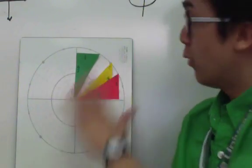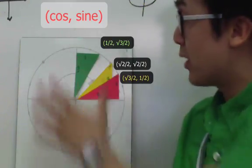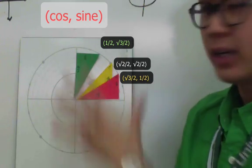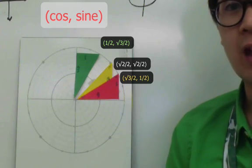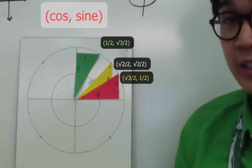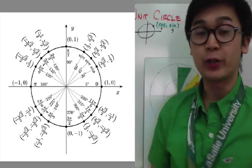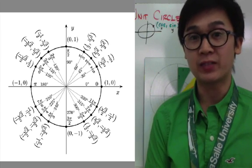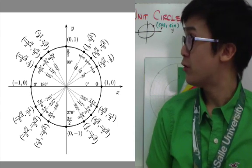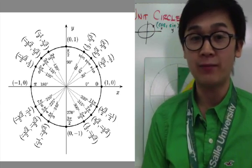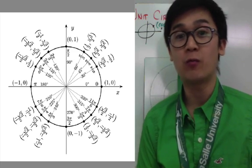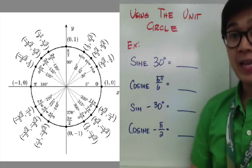These three values on our unit circle are repeated for the rest of the circle — the second, third, and fourth quadrants — with the only difference being the signs of each coordinate. Here is the complete unit circle: for 30 degrees, cosine is √3/2 and sine is 1/2; for 45 degrees, cosine and sine are both √2/2; and for 60 degrees, cosine is 1/2 and sine is √3/2.